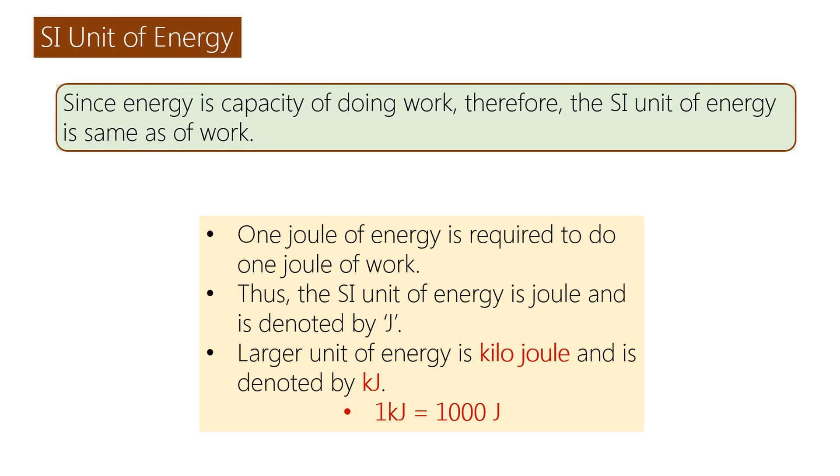SI unit of energy. Since energy is the capacity of doing work, the SI unit of energy is the same as work. One joule of energy is required to do one joule of work. Thus, the SI unit of energy is joule, denoted by J. The larger unit of energy is kilojoule, denoted by KJ. One kilojoule is equal to one thousand joules.